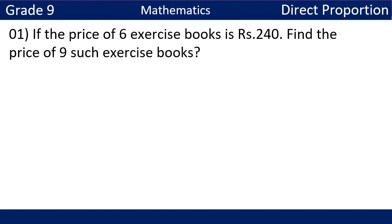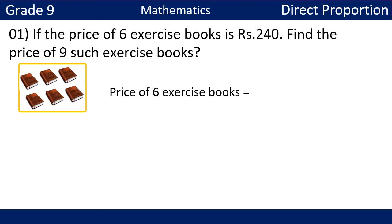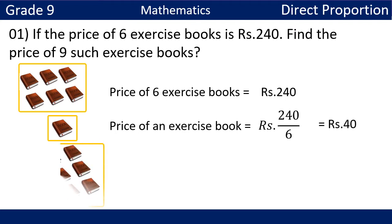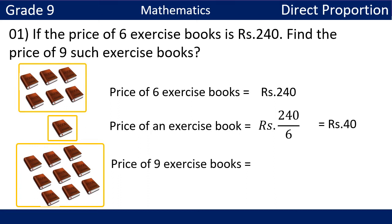First example: if the price of six exercise books is 240 rupees, find the price of nine such exercise books. We know the price of six exercise books is 240 rupees. So the price of one exercise book is 240 divided by 6, which equals 40 rupees. Then the price of nine exercise books is 40 multiplied by 9, which equals 360 rupees.